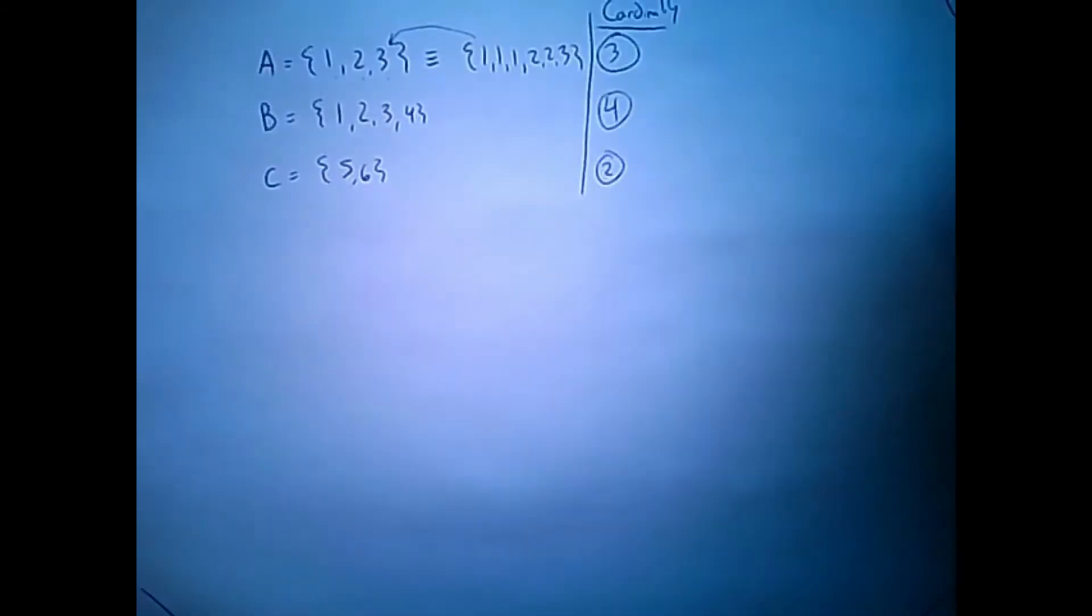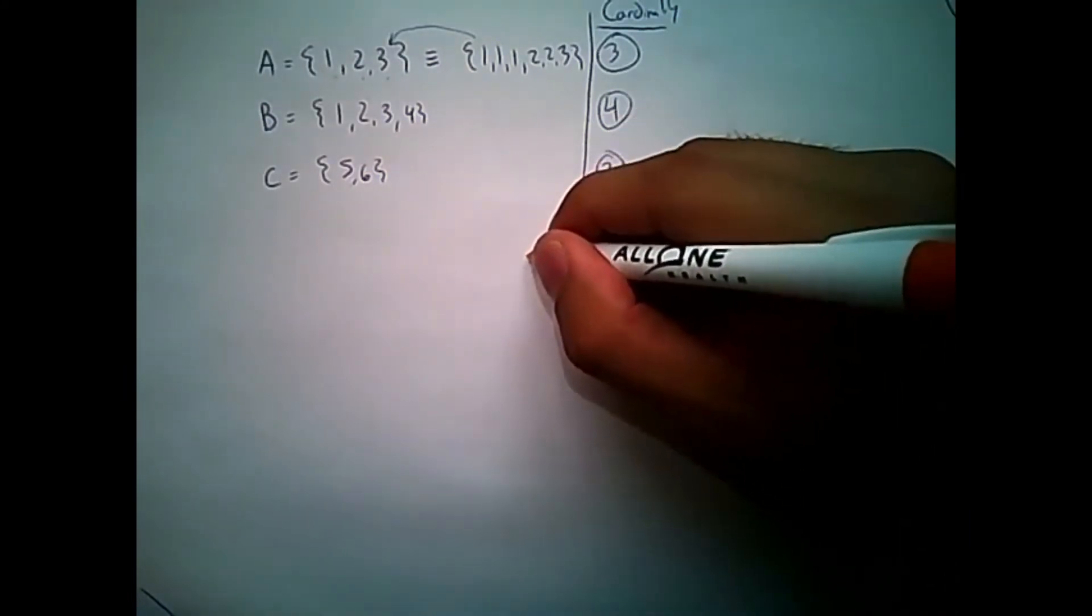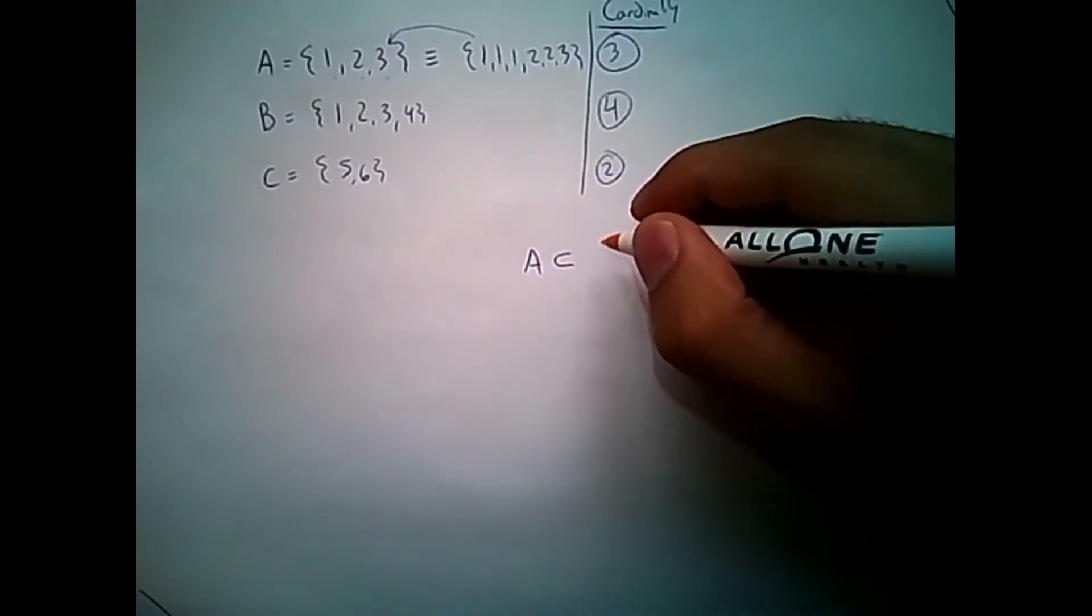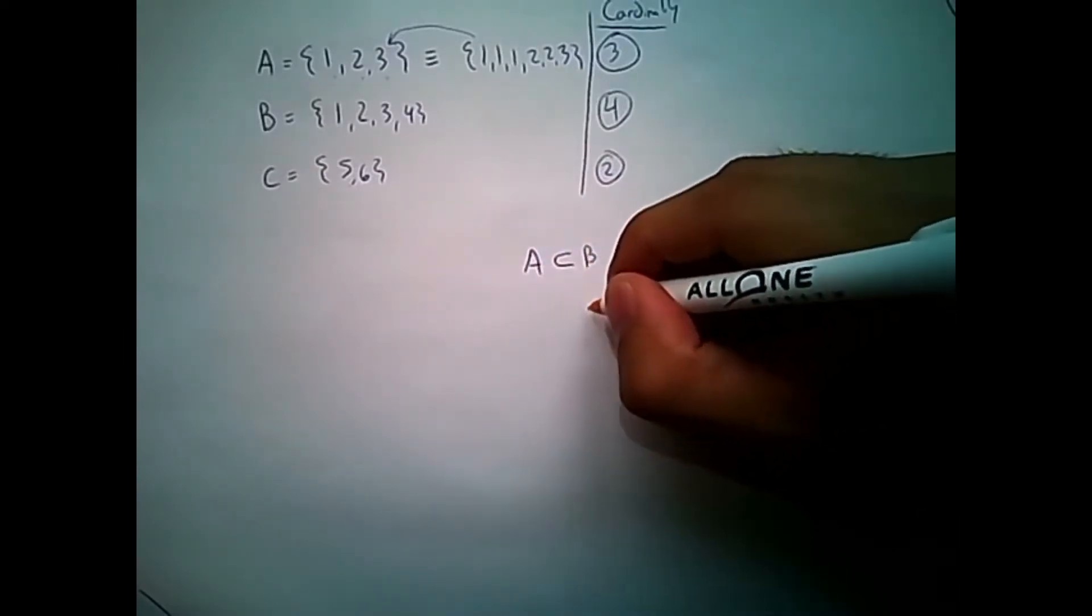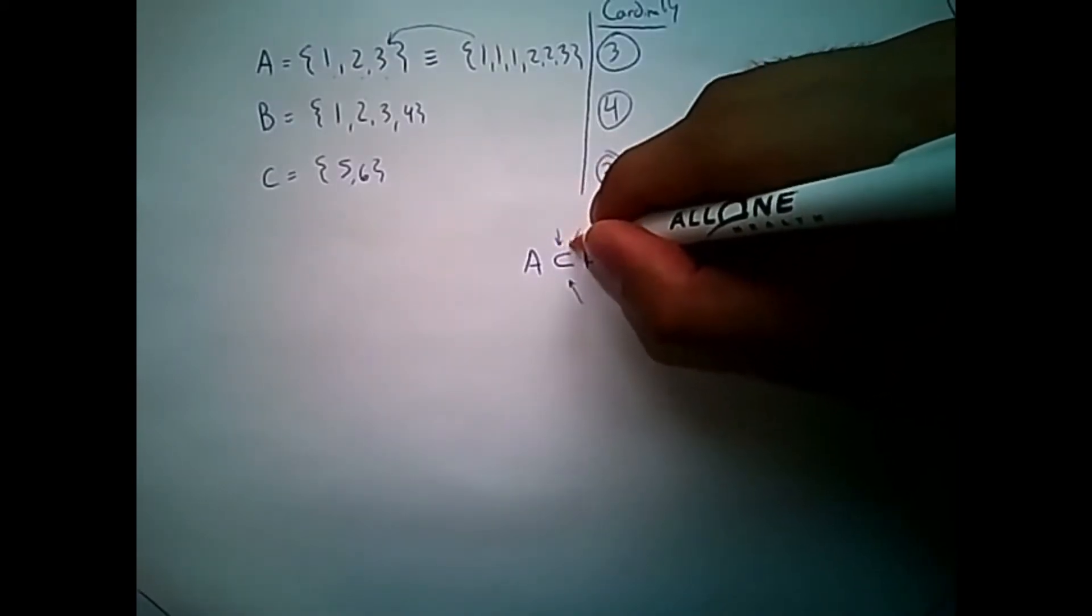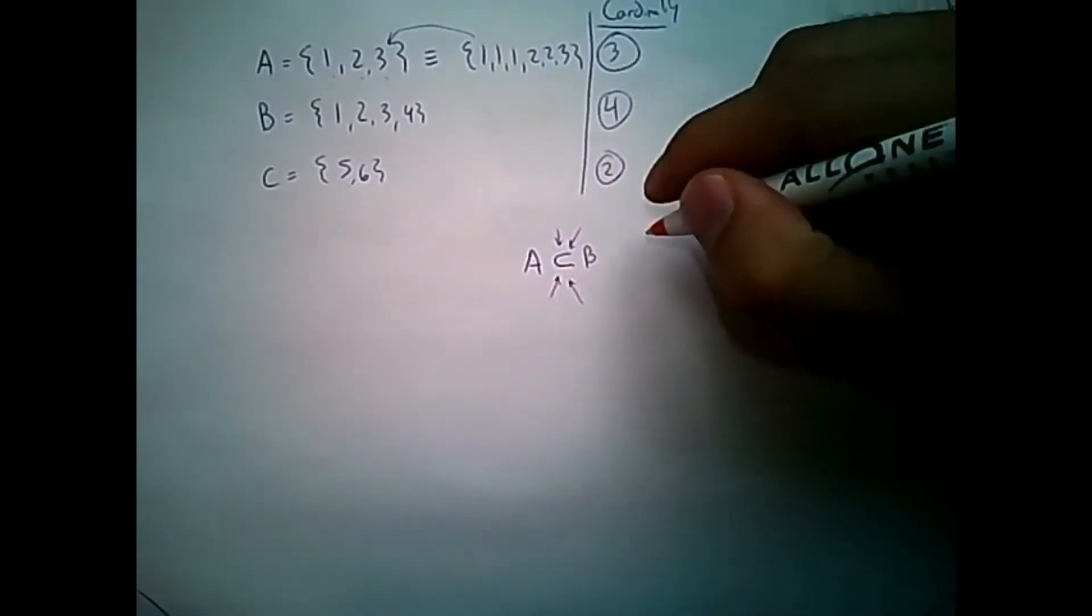Now, sets also have relationships with each other, in the sense that we can express what elements are in each set in relation to others. So A, we could say, is a subset of B. And the proper way to say this is that A is a proper subset, that's what this sign means here, of B.